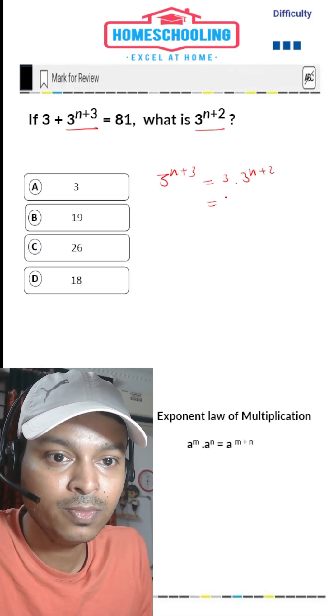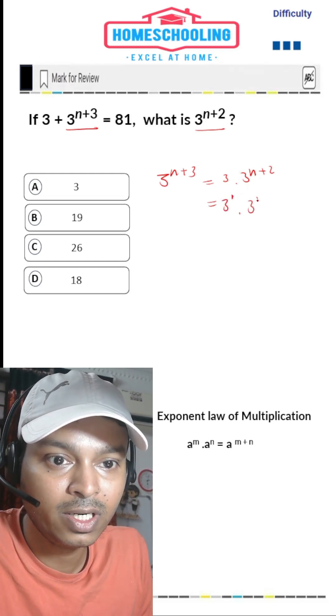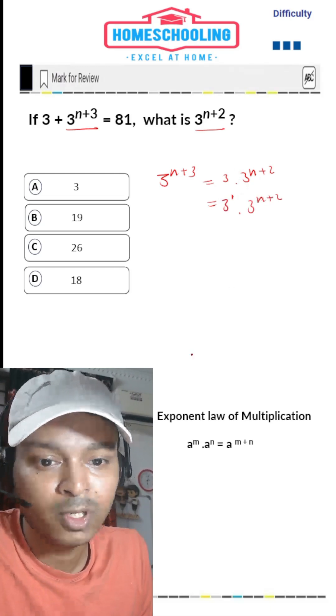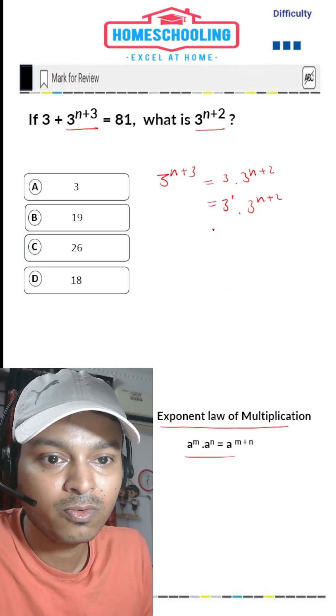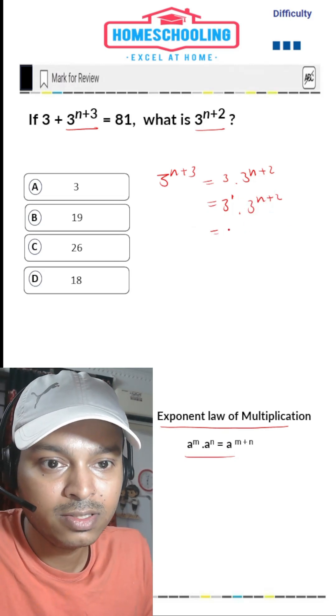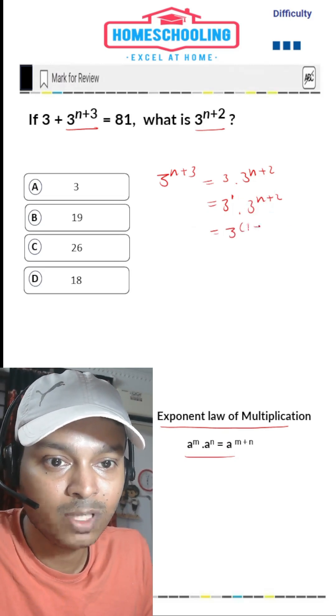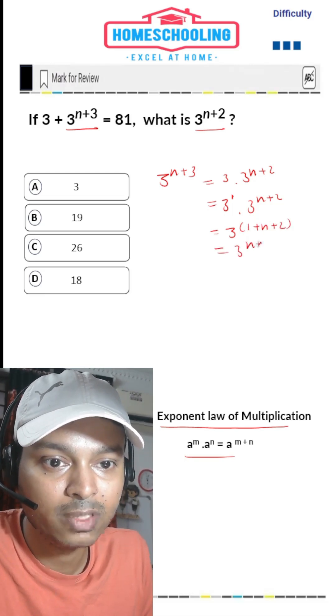How have we done this? 3 can be written as 3^1 times 3^(n+2). We can use the exponent law of multiplication. When powers have the same base, we can add the powers. So it can be written as 1 plus n plus 2. Both powers get added, so it is 3^(n+3).